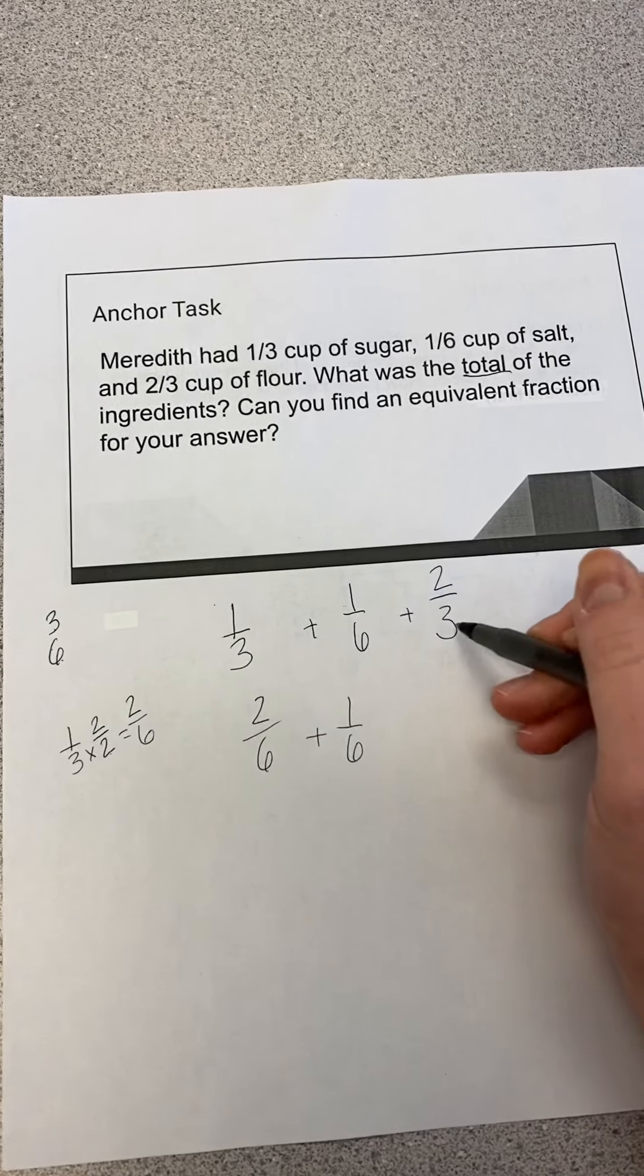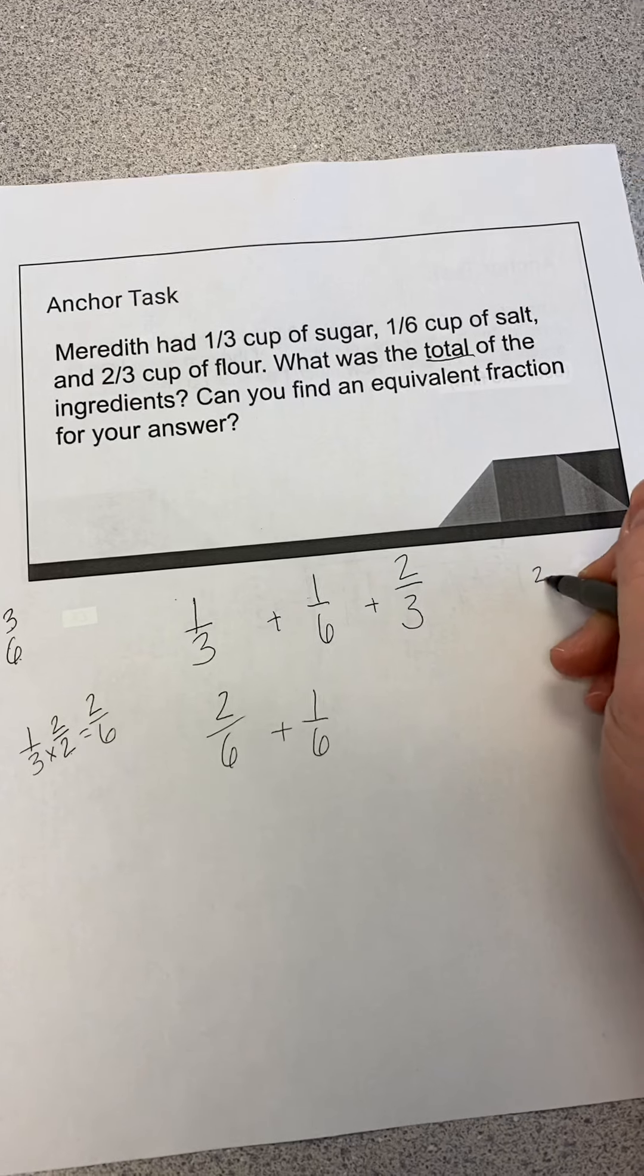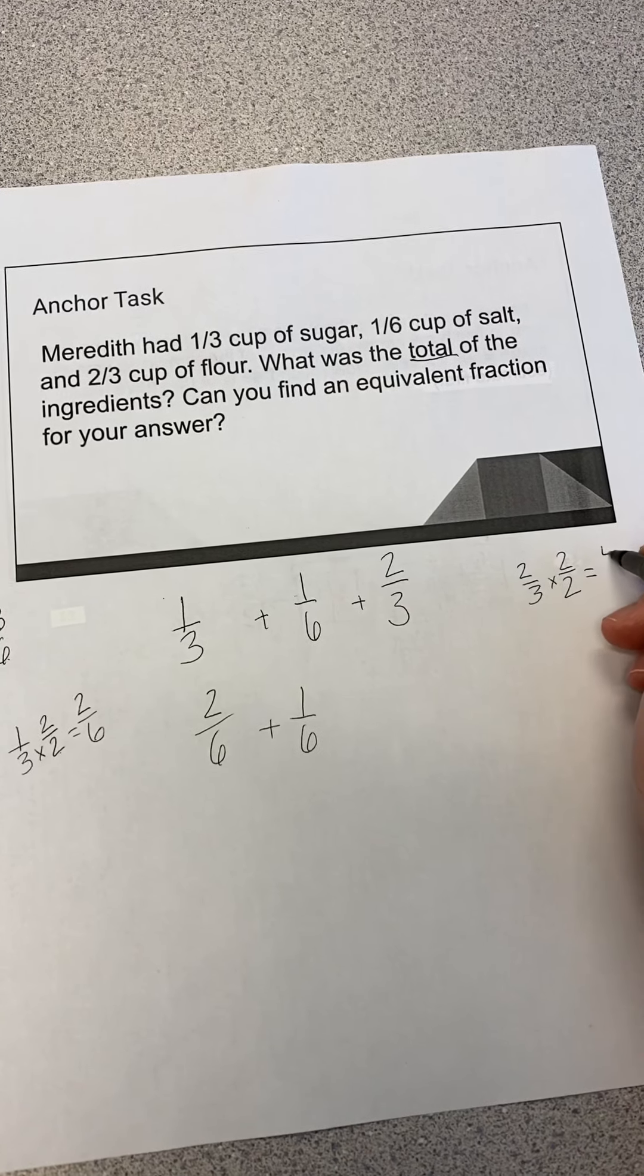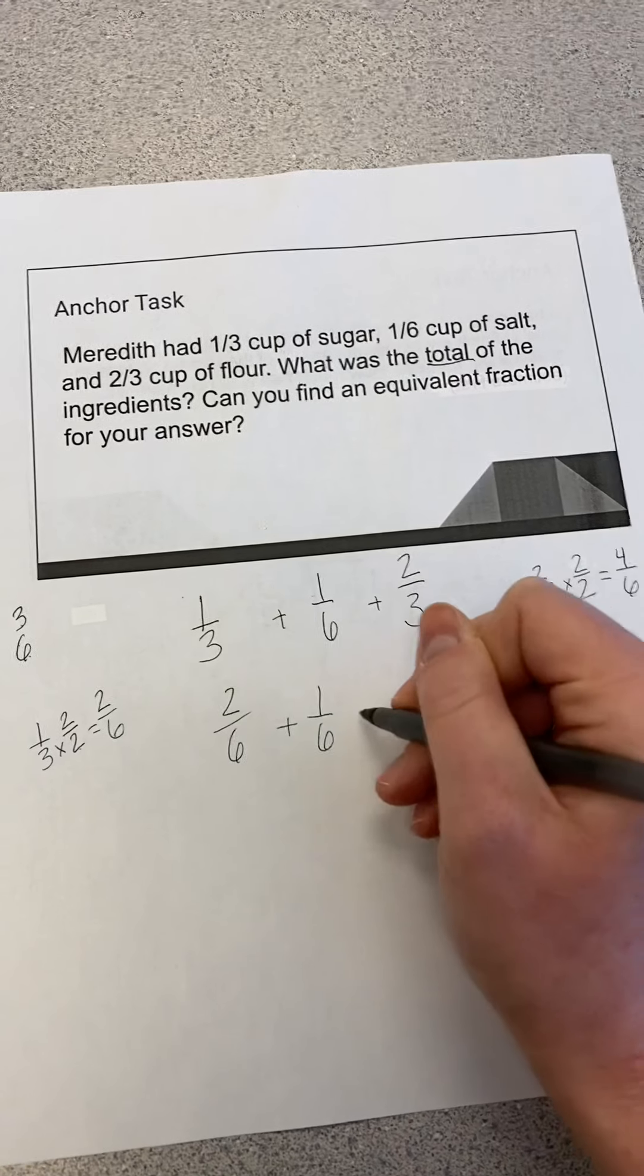And then two-thirds, I would do the same thing. Two-thirds times the power of one using two halves, and that gives me four-sixths.